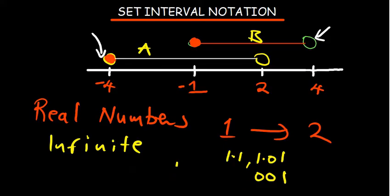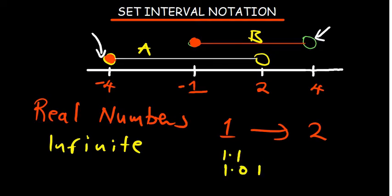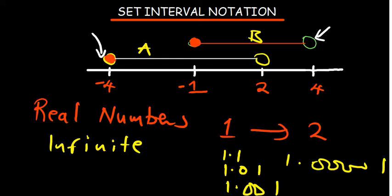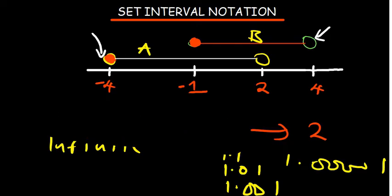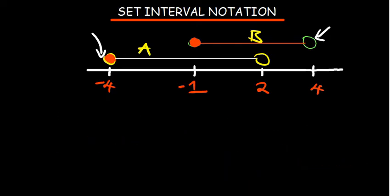Now let me ask a very interesting question: what number comes immediately after one that lies between one and two? Some of you may say 1.1, but what if I say 1.01? Again somebody may say 1.001, and somebody may continue adding zeros before the one. We basically don't know - that's why we now use set interval notation to represent our understanding of an infinite set that deals with real numbers.